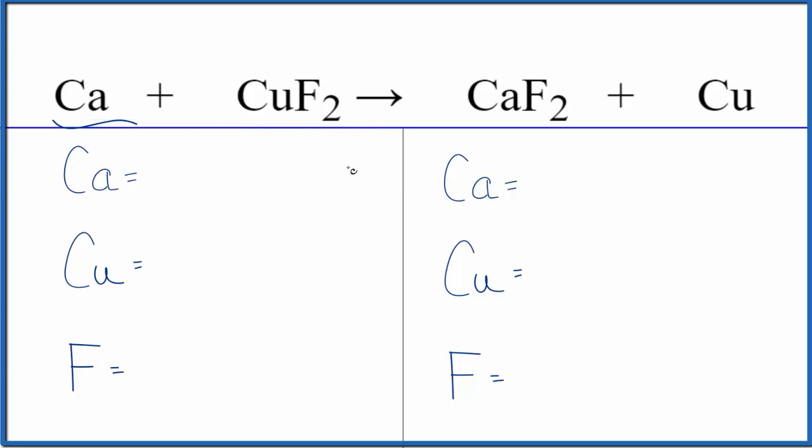So first off, this is a single displacement reaction. That's the type of reaction where the calcium is replacing the copper. The copper ends up all by itself, and now the calcium is bonded to the fluorine. So the type of reaction, single displacement.